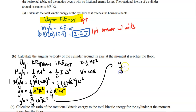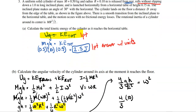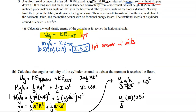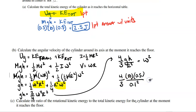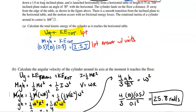Solving for omega: multiply both sides by 4/3, giving ω² equals (4/3)gh / r². Plugging in g = 10, h = 0.5, r = 0.1, and taking the square root, I get 25.8 radians per second. From the moment it leaves the table to the moment it hits the floor, omega stays the same because nothing else is causing it to spin.